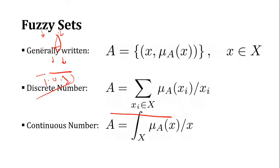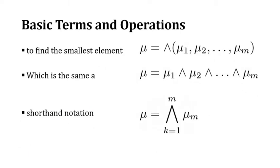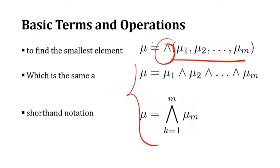A few basic operators used in fuzzy logic: one is called min and another is max. The min operator gives you the minimum value between two elements — for example, if I have 2 and 3 and apply the min operator, it returns 2. If I apply the max operator, it returns 3. These operators can also be applied to a list or sequence, and these are similar things written in different forms.